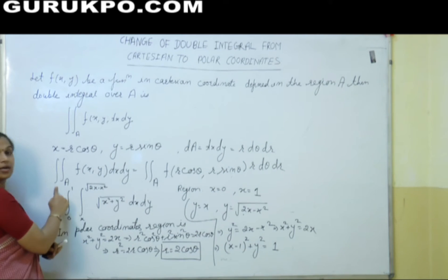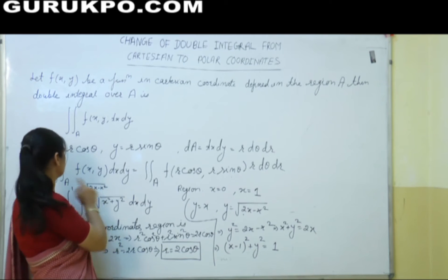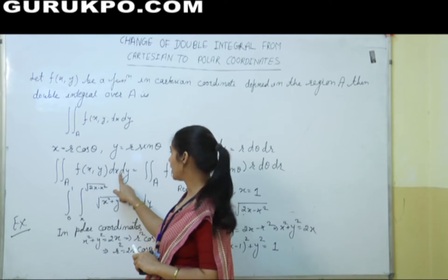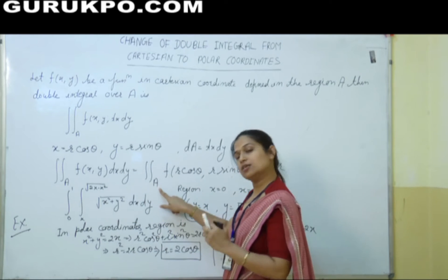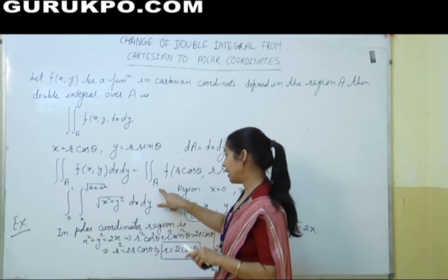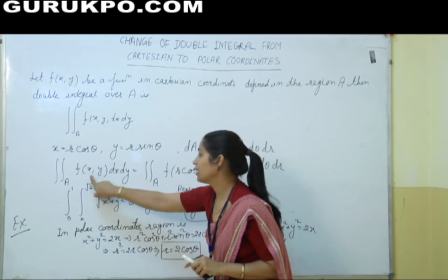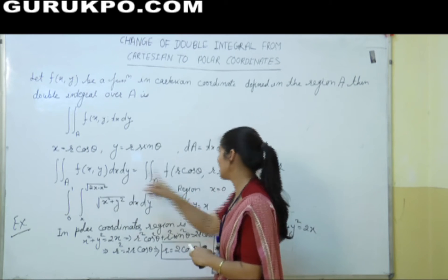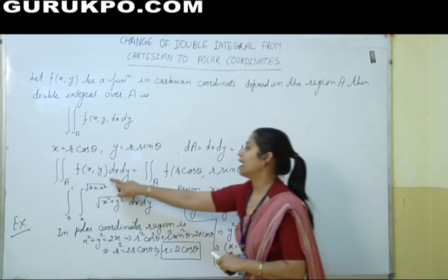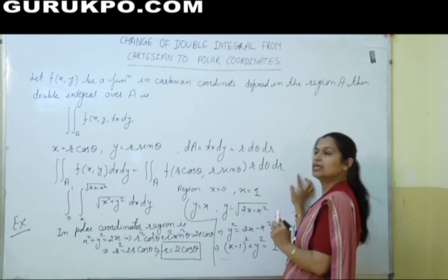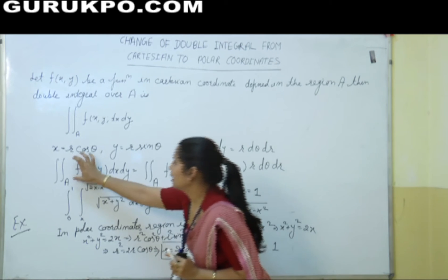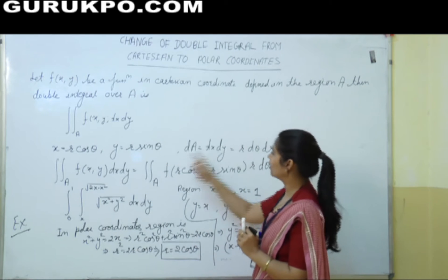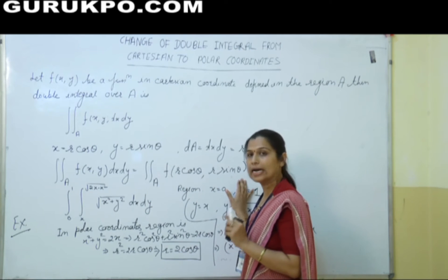So here, the double integration will become: double integration over A of f(x,y) dx dy equals double integration where x is replaced by r cosθ, y is replaced by r sinθ, and dx dy becomes r dθ dr.